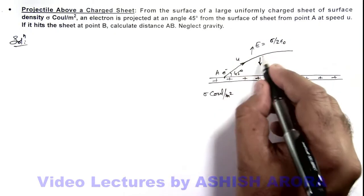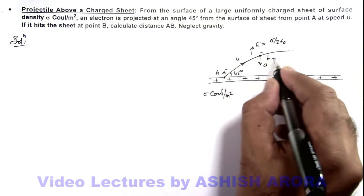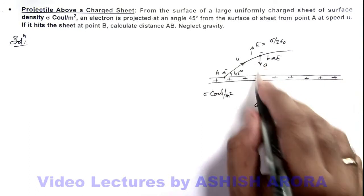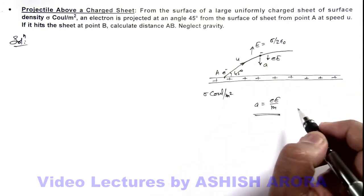And as being an electron, a negatively charged particle, it experiences a downward force qE. The charge of electron is e. So its effective gravity or acceleration due to this sheet is given as eE/m.